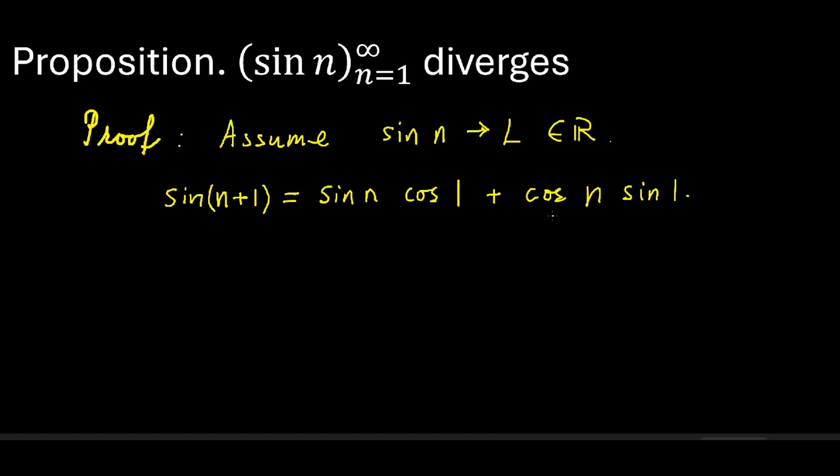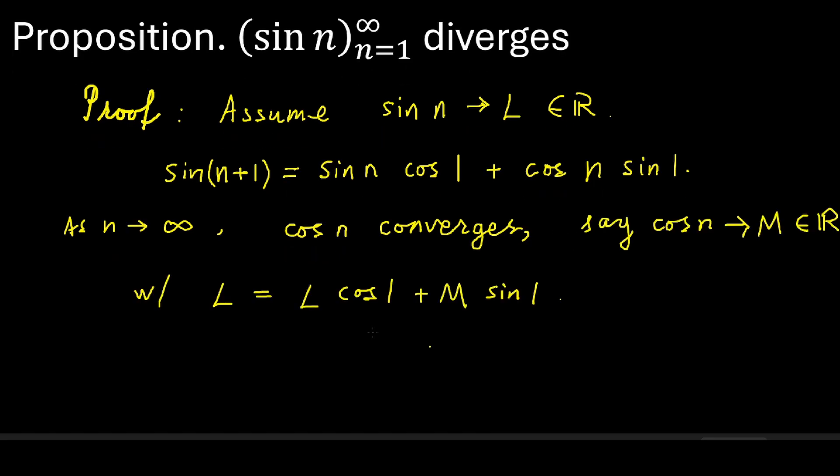That means the second term on the right hand side, cosine of n times sine of 1, must converge as well. And because sine of 1 is non-zero, it implies that the cosine of n also converges. Say to M, another real number, with L equals L times cosine of 1 plus M times sine of 1.